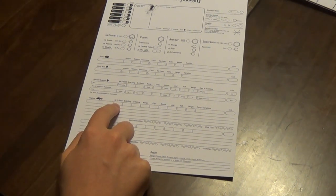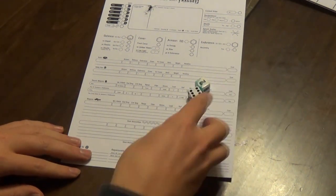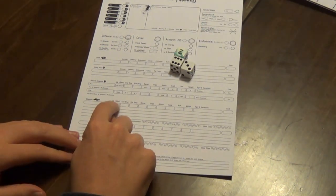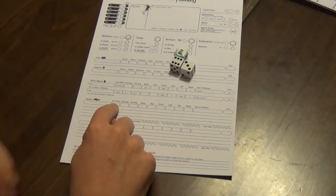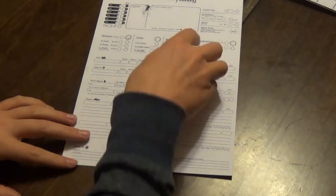Hit—that is the bonus to your to-hit roll. So your 3d6 will be plus that, and also if you've got a skill related to that weapon type, like pistol is a small arm, then you would add that, and that determines whether you hit your opponent or not.